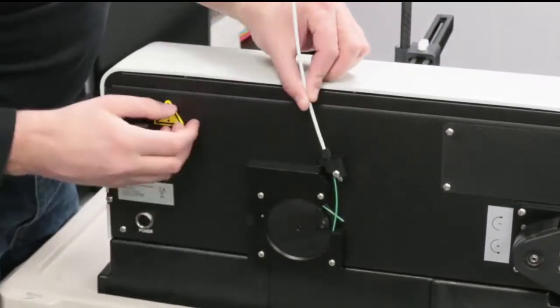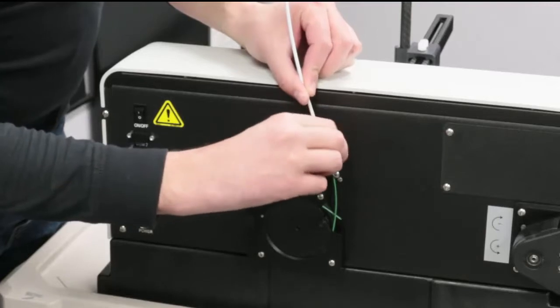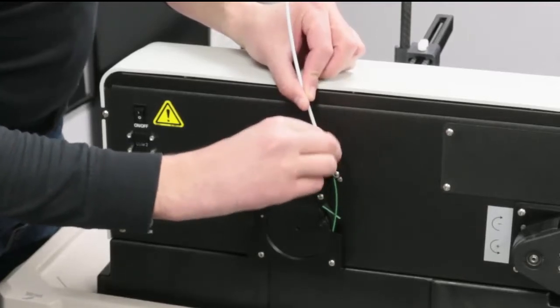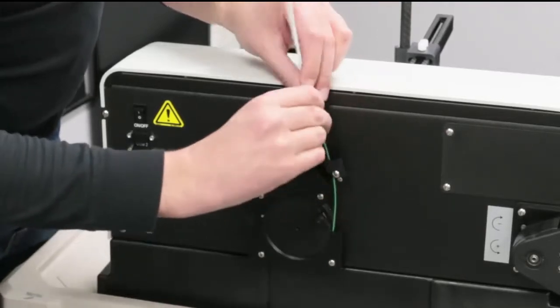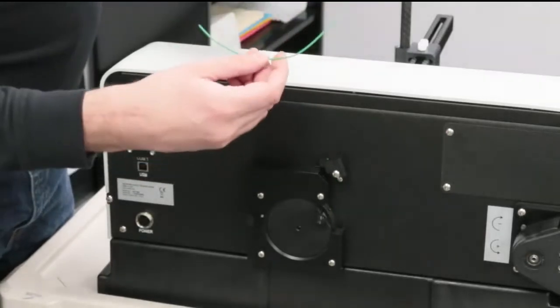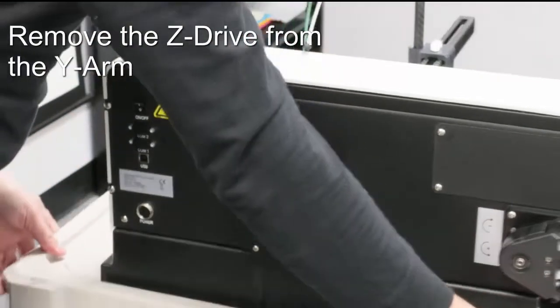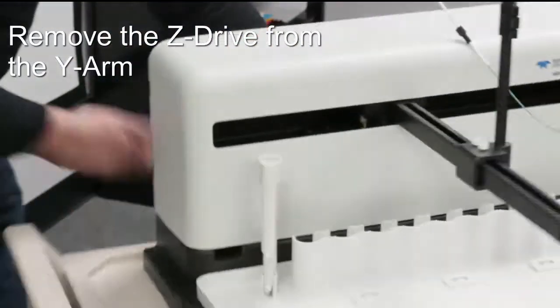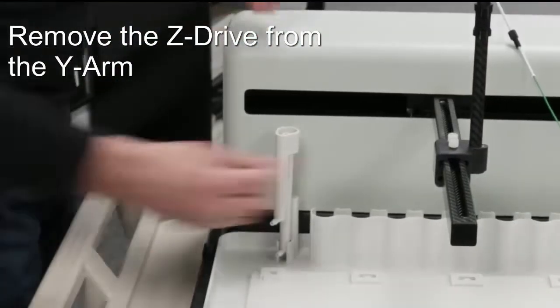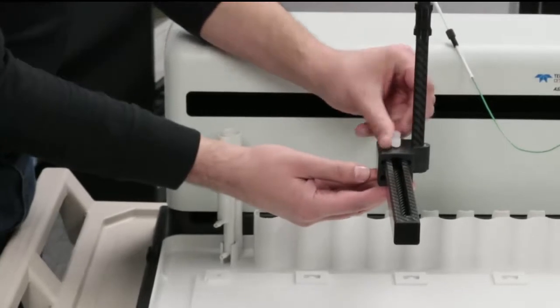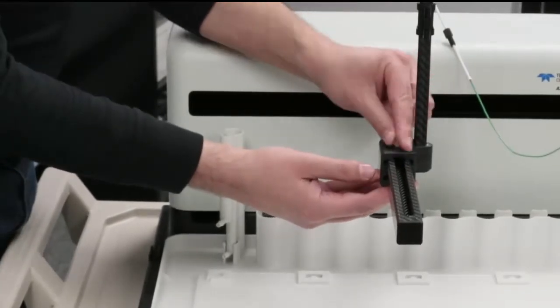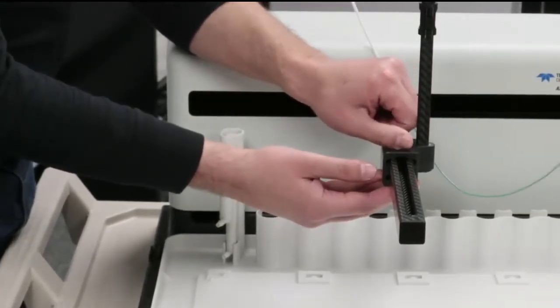Loosen the nut on the anti-kink swivel block. The entire peak cable can now be pulled out. Holding the Z drive to the arm are these two screws.